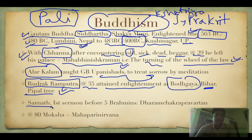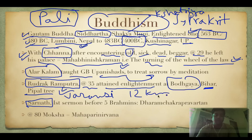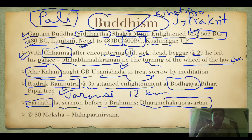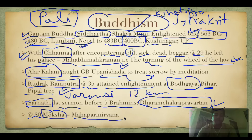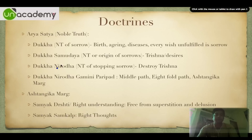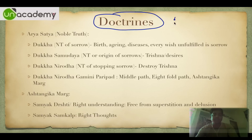Then at Sarnath, which is about 12 kilometers from Varanasi, his first sermon was delivered before five Brahmins. This is called Dharmachakra Pravartana. At age 80 he attained moksha, which is called Mahaparinirvana. Please remember these three key terms: Mahabhinishkramana, Dharmachakra Pravartana, and Mahaparinirvana.